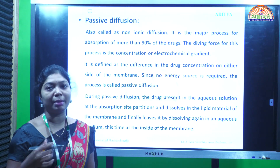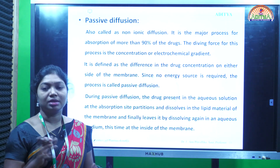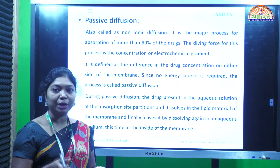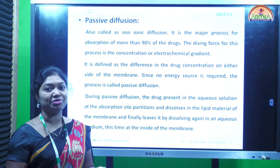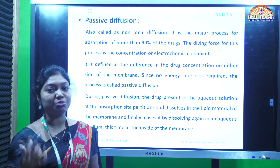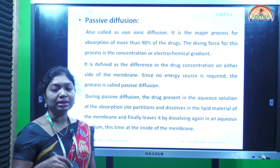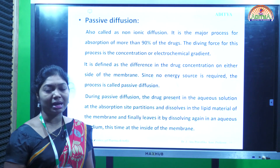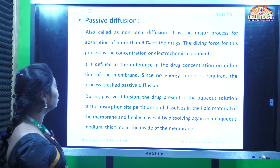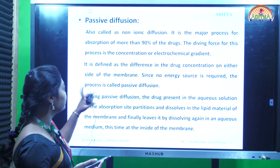Generally, the maximum amount of drugs get passed through the membrane in their unionized form. When compared to the ionized form, the unionized form of the drugs can rapidly cross the membrane - 3 to 4 times more rapidly. Among all the different mechanisms, almost 90% of the drugs get absorbed through passive diffusion.